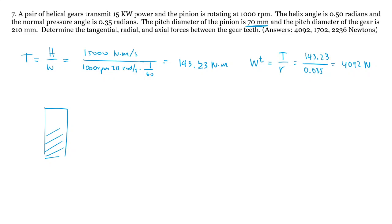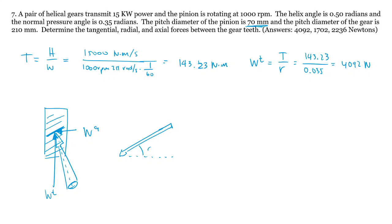My helical gear, viewed from the front, shows that Wt I just calculated goes in that direction. There's another component of force in the axial direction because the force has to be perpendicular to the teeth — it's going into the monitor. If I draw that dashed line, the 3D vector forms an angle of ψ (psi) with the normal to the teeth, and another angle φ between the normal to the teeth and the tangential direction.